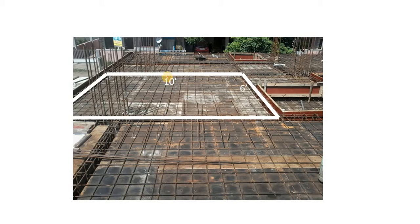Consider a construction site where the slab you have to cast is 10 feet in length and 6 feet in width, supported by four beams on each side. You need to think how much load is carried by each beam so you can provide the correct reinforcement. If you don't know how the load of this slab is transferred to the beam, you cannot design the beam. That's why it is very important for you as a civil engineer to know how a slab transfers its load to the beam.